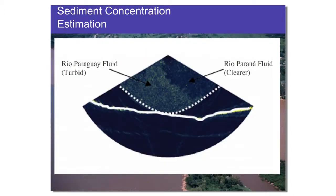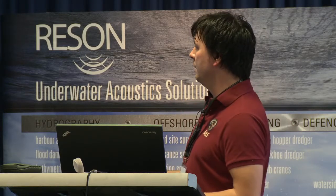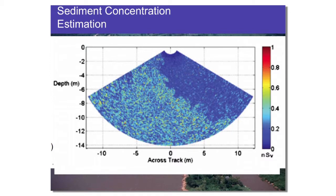For example, at the mixing interface of the Paraná and Paraguay rivers in northeast Argentina, this shows a nice example of exactly how that tool can function and allow us to understand something about the flow processes. We have the Paraguay fluid here, which is turbid and sediment-rich. On the right, as you look, is the clearer Paraná River fluid.